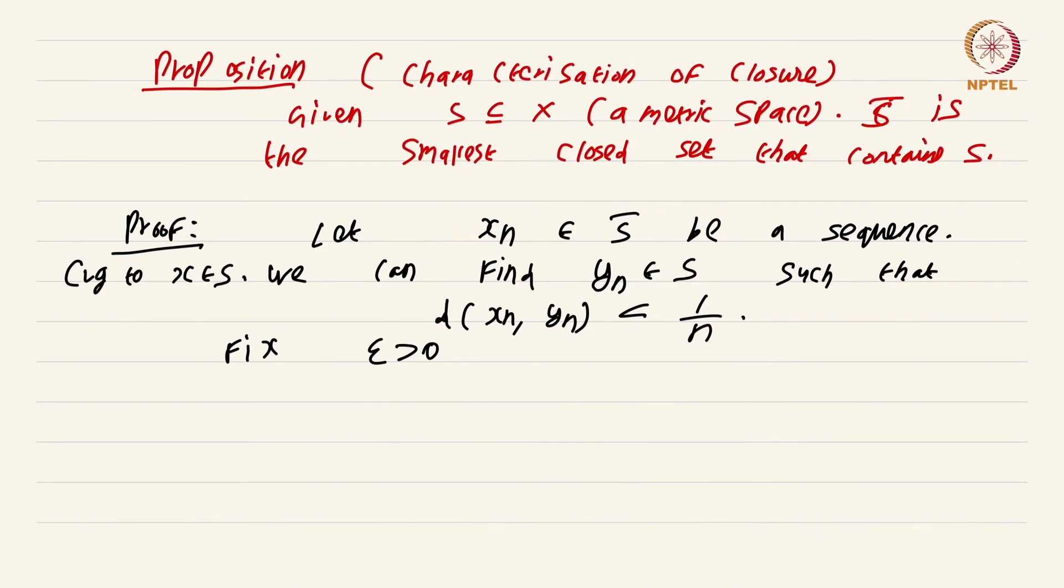So let x_n be a sequence in S closure that converges to a point. So again a slight error. This should be x in S closure, or rather again this should be just x in X. Our goal is to show that this x is actually an element of S closure, which will prove that S closure is in fact closed.